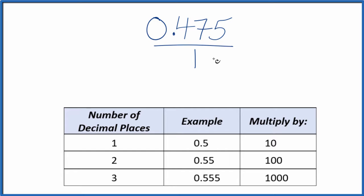It would be nice if we could get this to a whole number up here, the 0.475. I can see there are one, two, three decimal places. So when there are three decimal places, we multiply this by a thousand. That'll give us our whole number.